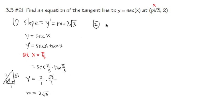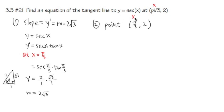Secondly, I'm going to pick a point. The point is the one we already have: pi over 3, 2. This is the x₁ value and this is the y₁ value.